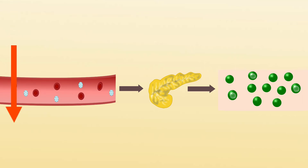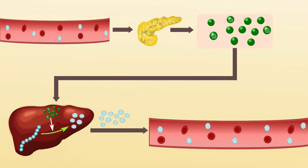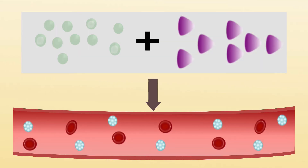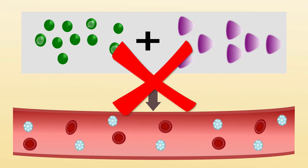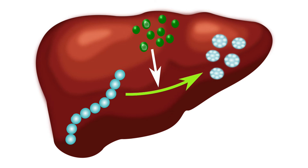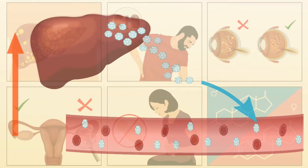When blood sugar levels are low, glucagon is released by the pancreas. It acts on the liver to break down glycogen and release glucose into the blood. Thus, glucagon and insulin work in a complementary manner, balancing blood sugar levels within a desirable range in healthy people. This relationship is disturbed in people with insulin resistance — in such people, the pancreas doesn't stop releasing glucagon, which further releases more glucose from glycogen, hence increasing blood sugar levels.